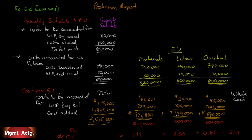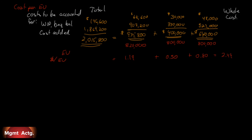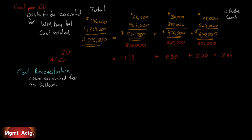The question ends here, but I'm going to do the third part. While the second part had costs to be accounted for, the third part is called the cost reconciliation — costs accounted for as follows. This parallels how the quantity schedule had units accounted for as follows. Now we're going to account for our costs.